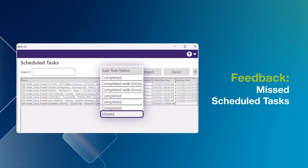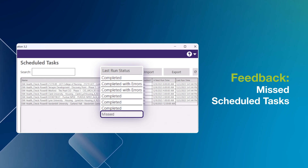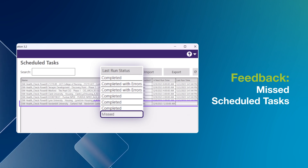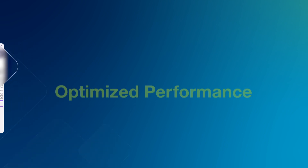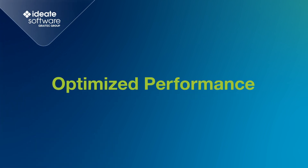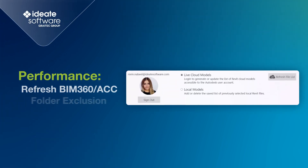Scheduled Tasks require the machine to be powered on. If it's off, missed tasks previously went unnoticed. Now, the Task Scheduler flags them as missed. Next is Optimized Performance.